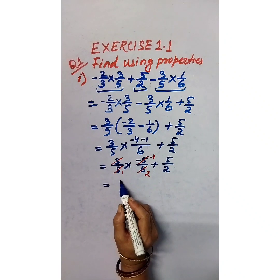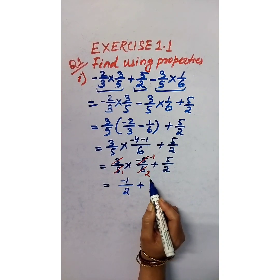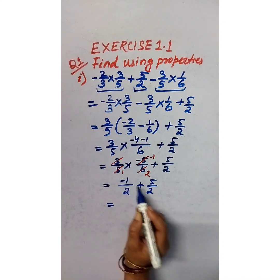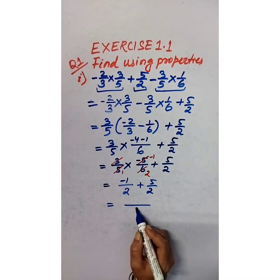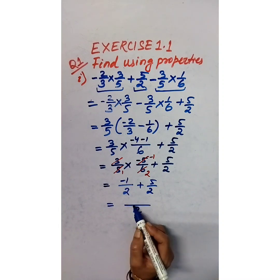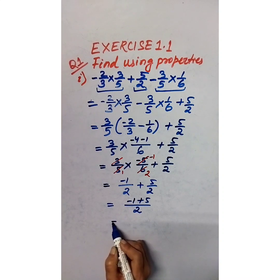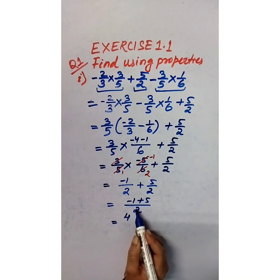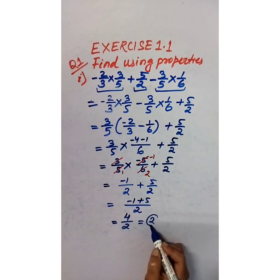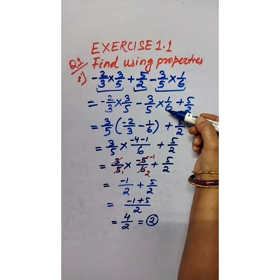So we get negative 1/2 plus 5/2. You know how to add these — both have denominator 2, so the LCM is 2. Negative 1 plus 5 equals 4, divided by 2, that is equal to 2.